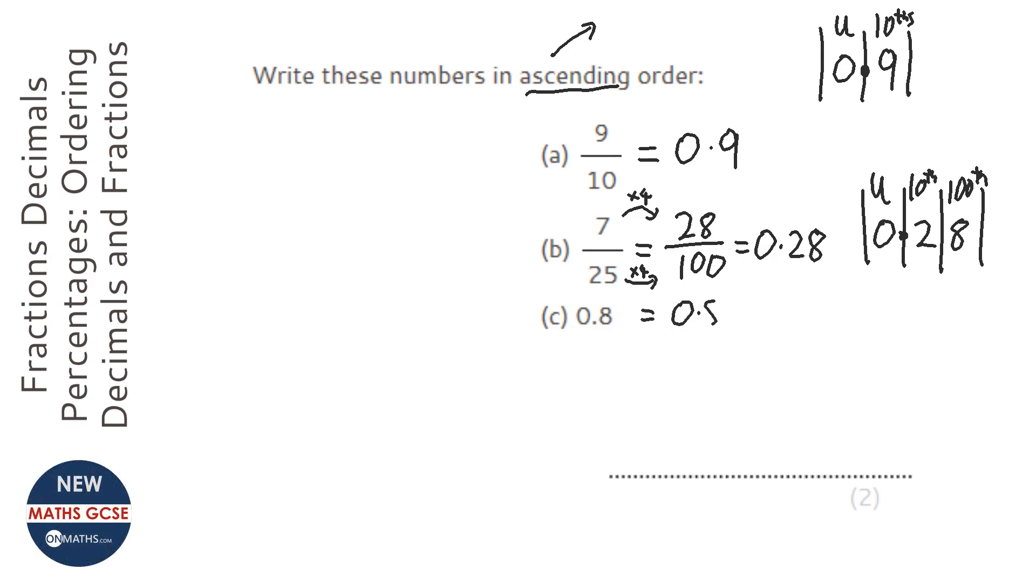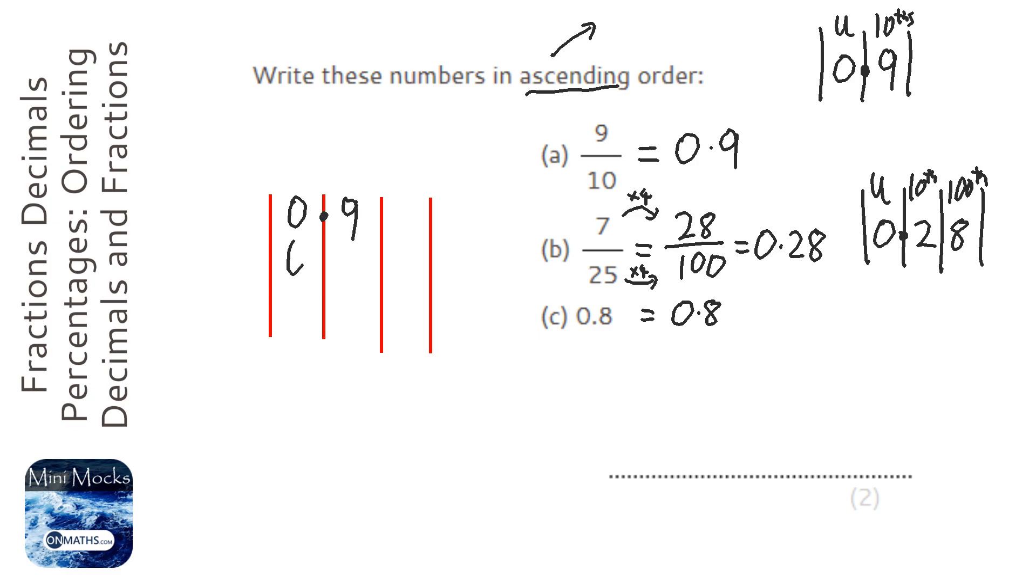Okay, and this last one is just 0.8. Well, that's kind of given to us in the question. So, what I want to do is line all of these up, so I'm going to just do some lines. And we're going to have 0.9, 0.28, and 0.8.